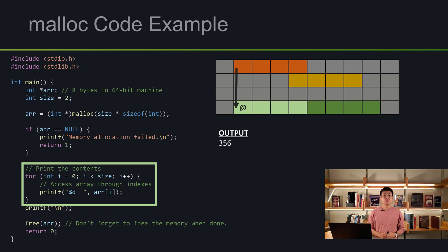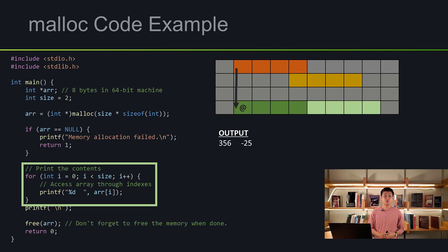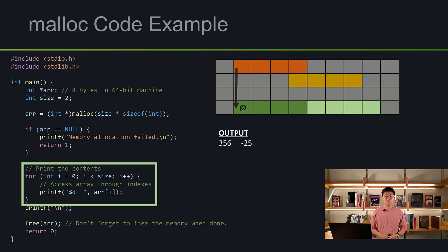In the for loop, it printed out 356 — so the very first index was initialized to 356. Entering the for loop again, it prints out the second index, which happens to be minus 25.